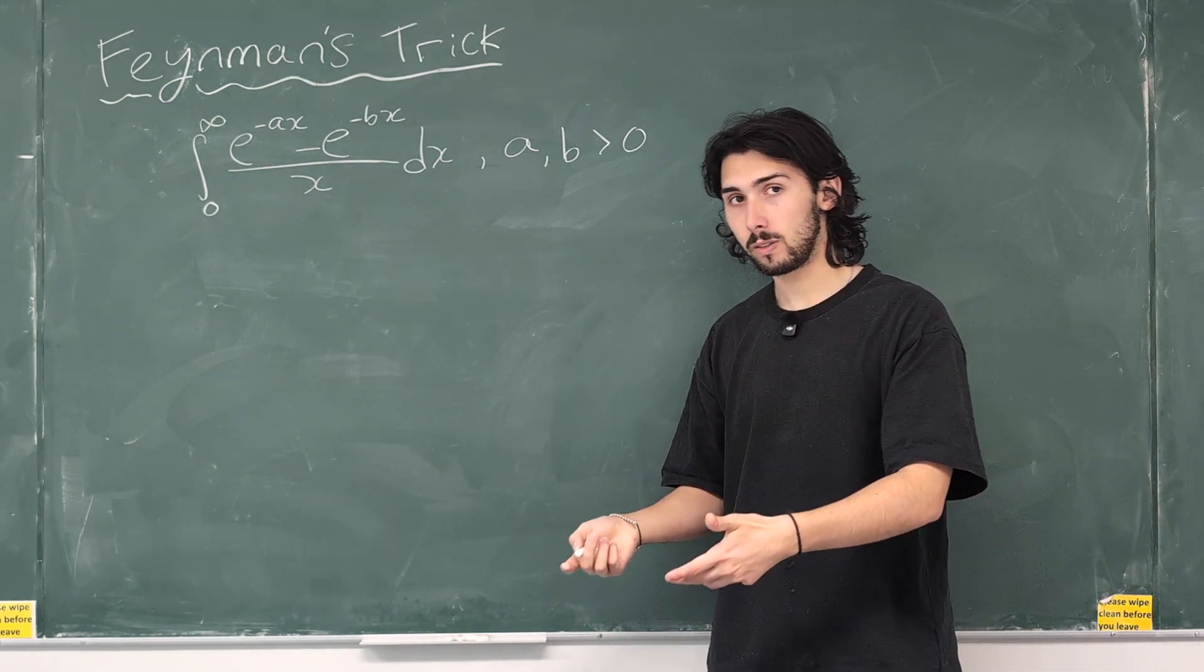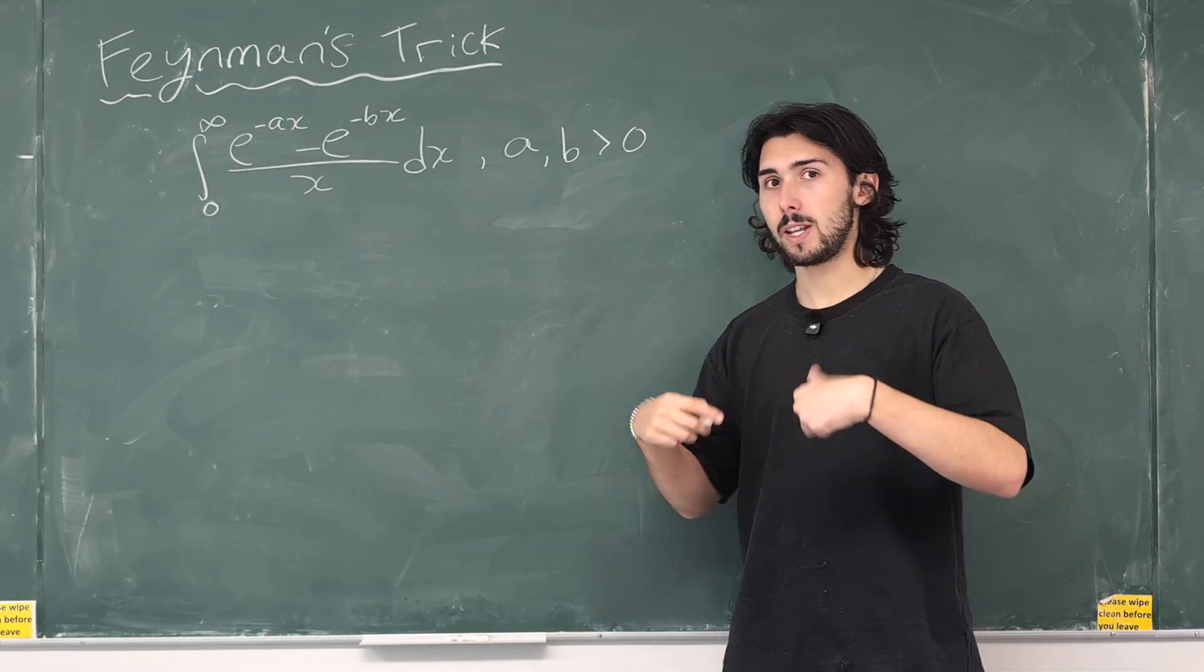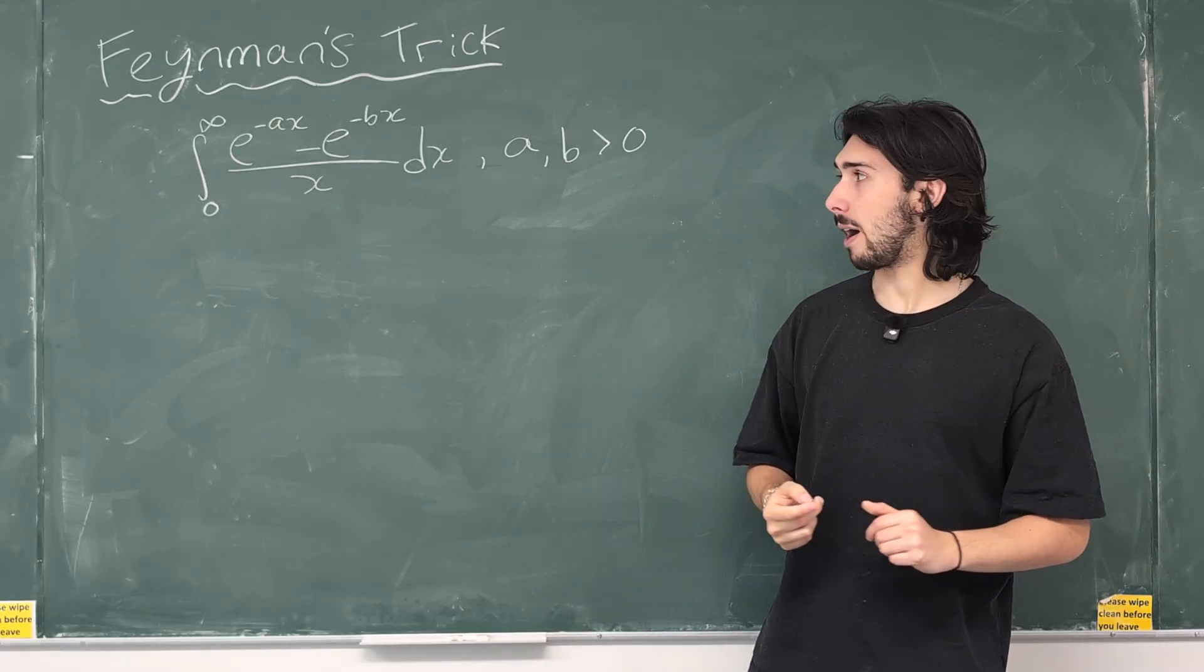So, differentiating with respect to a constant inside of the integral can be really beneficial and advantageous because it will cancel out and it'll make the integral easier to do. We can then compute that integral, the simpler one, and then integrate. We're about to see how it works now.